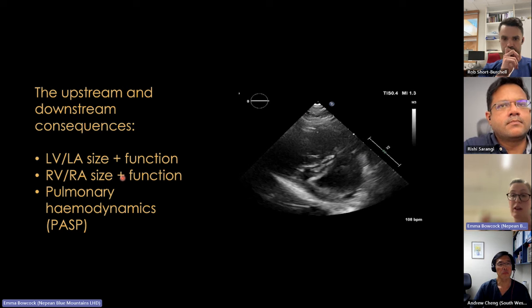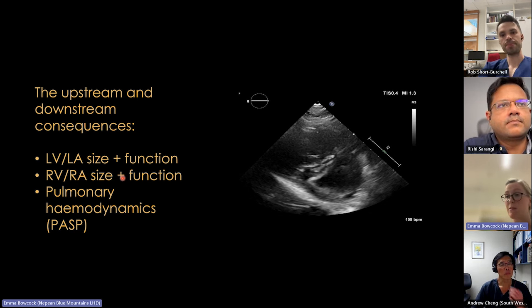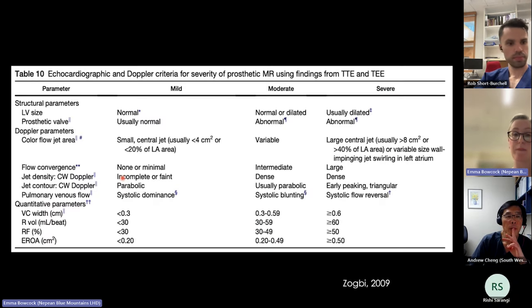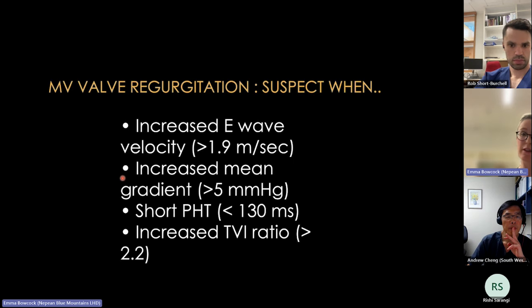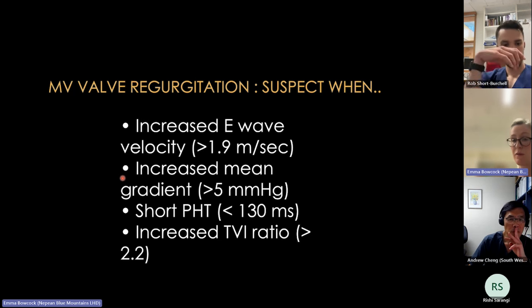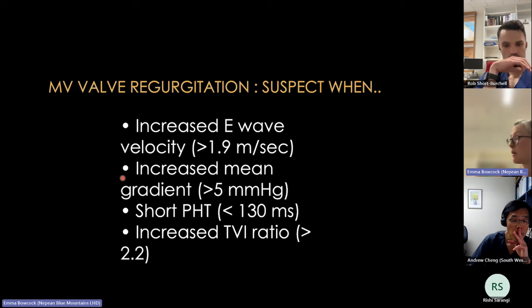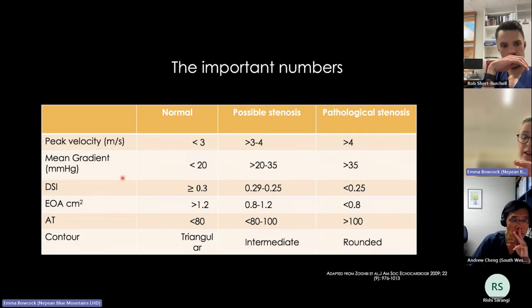Always look at the downstream effects of valve obstruction — pulmonary hypertension, RV dysfunction, LA and LV remodelling. For aortic valves in particular, assess LV and LA remodelling. Prosthetic mitral regurgitation assessment is similar to native mitral regurgitation assessment using an integrated approach.